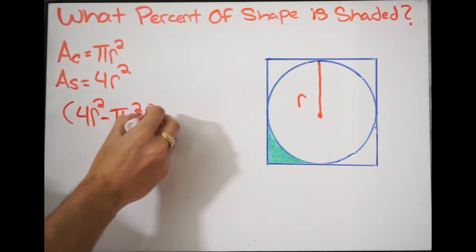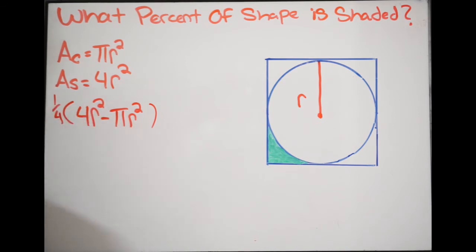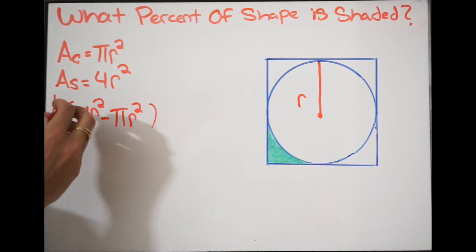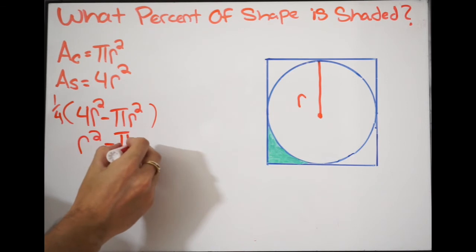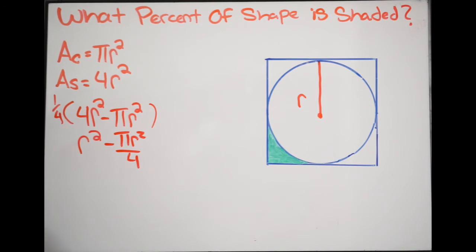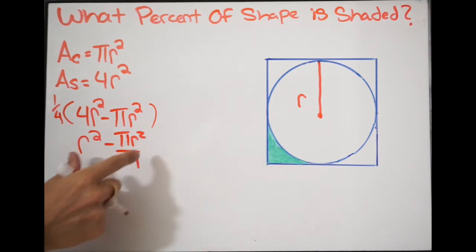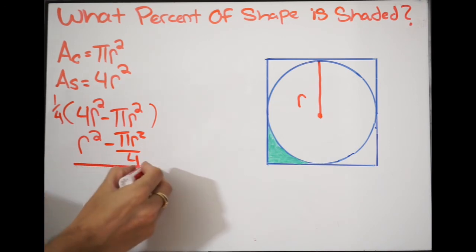So only 1 out of those 4 regions are shaded. So in other words, I'm going to multiply this whole thing by a quarter. And all I'm going to do at this point is distribute this quarter inside to both of my terms. And when doing that, I'm going to get the following: I'm going to get R squared minus pi R squared all over 4. So this now is giving me this small region right here that is shaded. But I want the percent. So what I need to do is take that shaded region, which we have here, and put it over our total area, which in this case is going to be the area of the square, so over 4R squared.